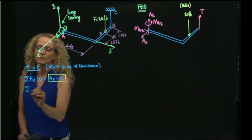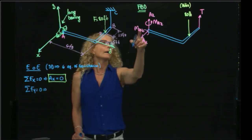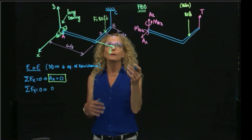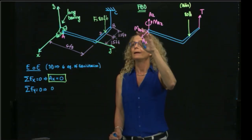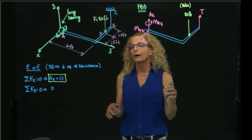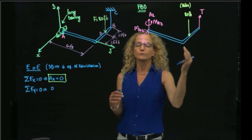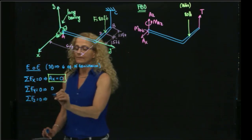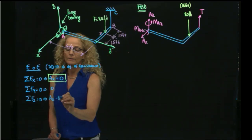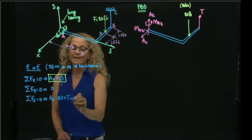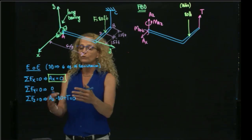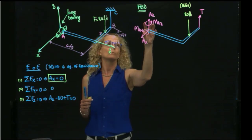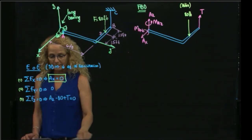The second equation is the sum of forces in y - I don't have any forces in y, so that equation doesn't contribute to the solution. For z, I have Az, negative 80 pounds, and positive tension, giving two unknowns in that equation. To get additional equations, I will take the moment with respect to point A, which as a vector equation gives three scalar component equations.